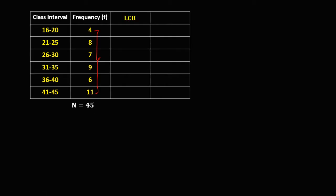Then solve for the lower class boundary. To get the lower class boundary, from the lower limit, minus 0.5. So 16 minus 0.5 is 15.5. 21 minus 0.5 is 20.5. Then 26 minus 0.5 is 25.5. 31 minus 0.5 is 30.5.